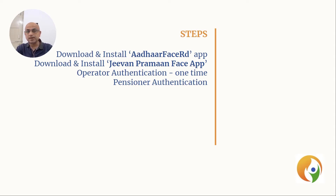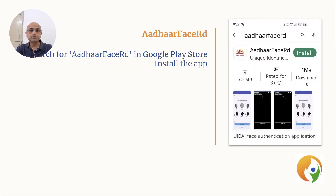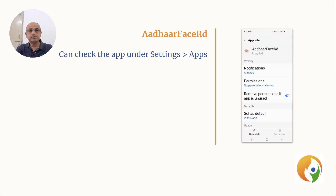Operator authentication is one-time after you install the app. For next time usage, you will directly use pensioner authentication. To install the first app, search Aadhaar FaceRD in Google Play Store. When you find it, install this app. You won't see this app in your list of app icons on the home screen after install. Instead, you need to use Settings apps to find it in the list to check this app. After you install it, you don't have to do anything specifically — the main Jeevan Praman app will be using this software indirectly for some steps.